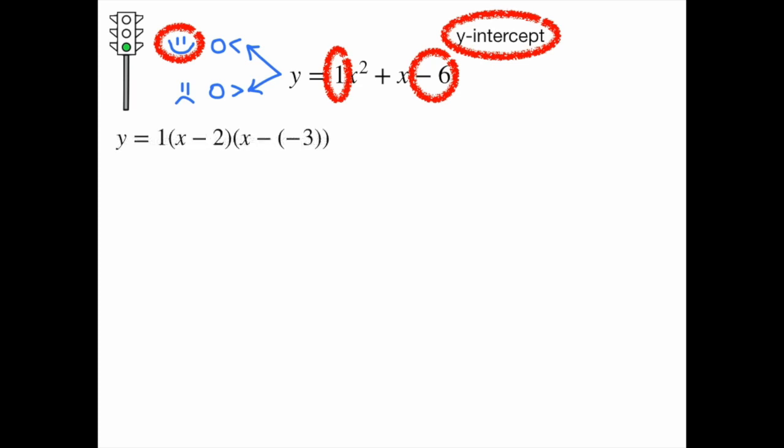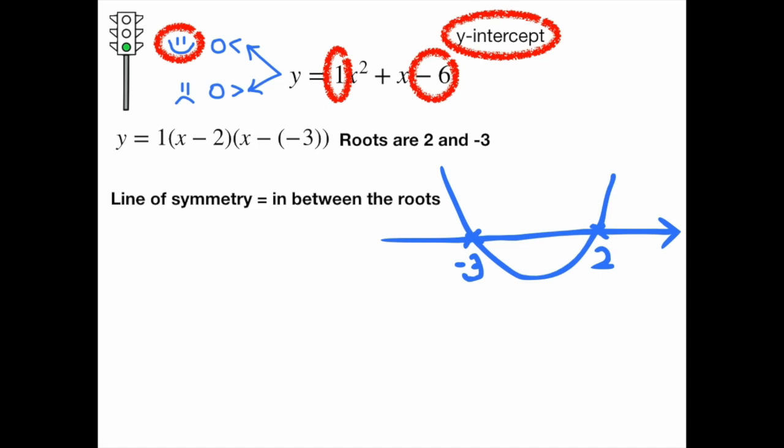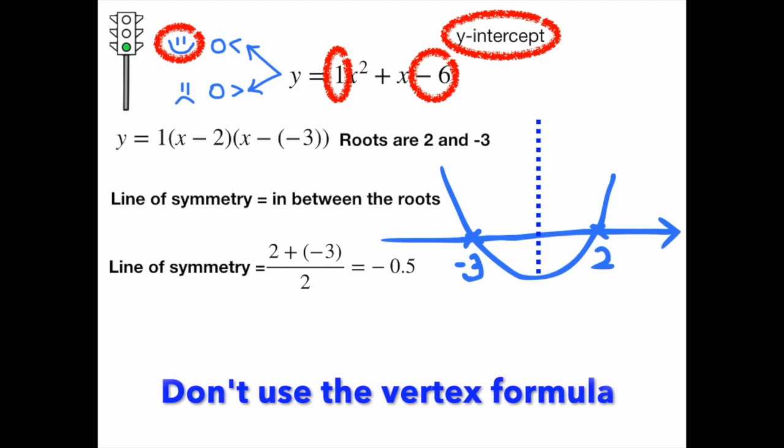Next, take your preferred path to obtaining the two X intercepts of 2 and negative 3. This should take approximately one minute. After which, come to the realization that the line of symmetry is smack in the middle of both roots. There is no need to apply a complicated formula here.